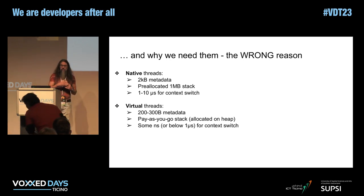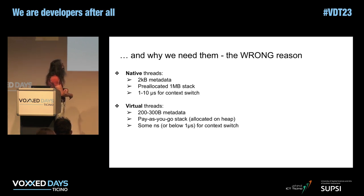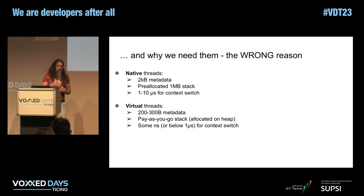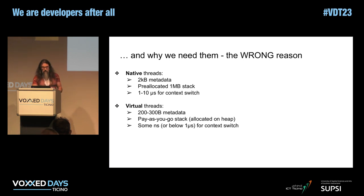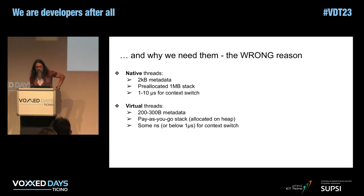Why can you do this? Because the stack this time is a plain Java object — it is allocated on the heap like any other Java object. The other important thing is that you normally pay a quite large performance cost when you have lots of context switches with native threads, mostly because it's an operation that happens in kernel space. With virtual threads, the context switch happens in user space, and it's generally ten times faster than a native thread context switch.